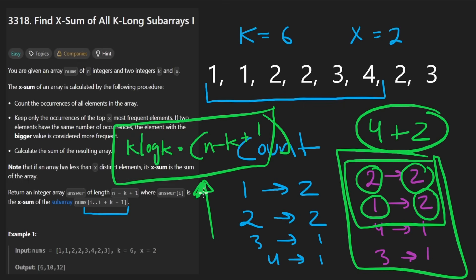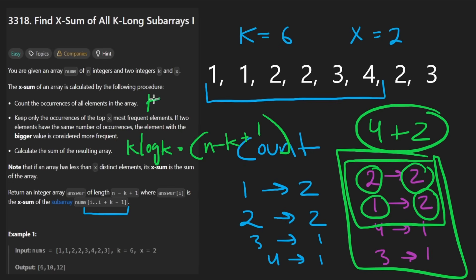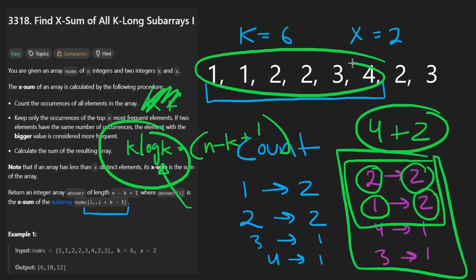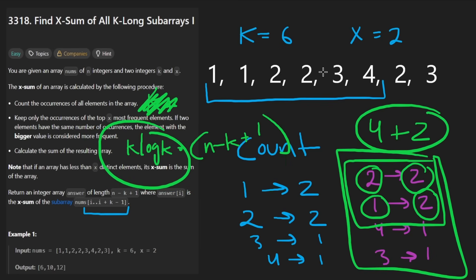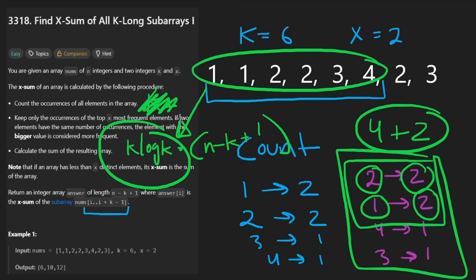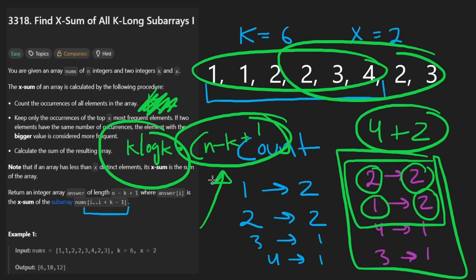It's important to analyze this because intuitively you'd think sliding window would be better, but it's actually the exact same complexity. Even with the sliding window, we still have to sort the subarray, so we can't eliminate the K log K term, and we still have to look at every subarray. So the sliding window approach is a little more complicated but not more efficient. You can code it if you'd like — nothing wrong with it — but I'm not going to do that.